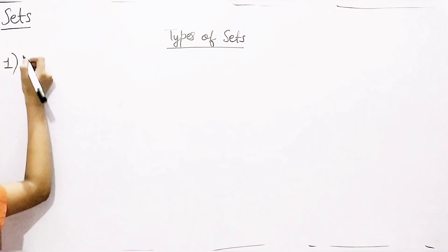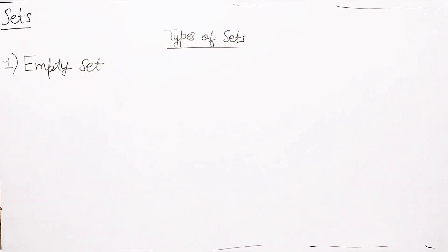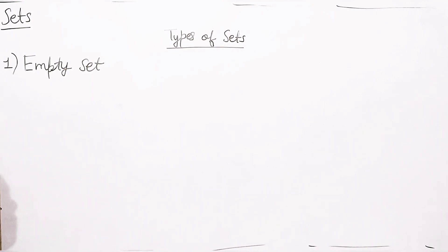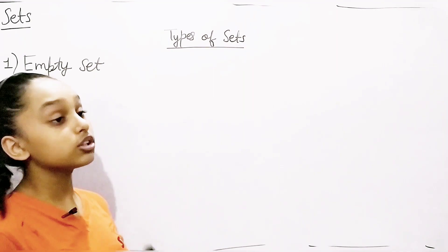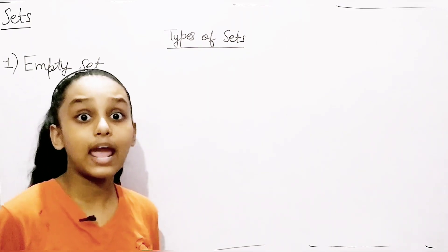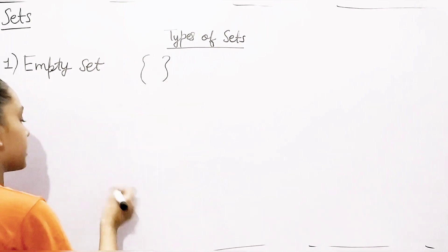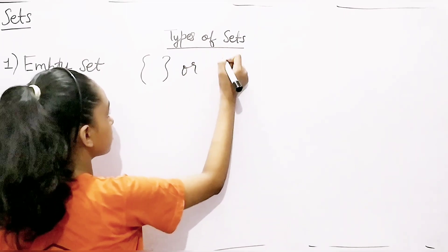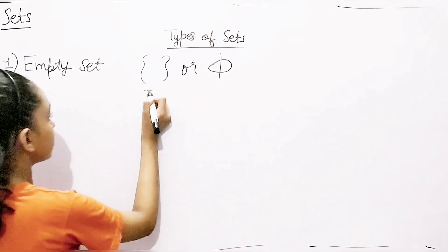So the first type of set we're going to cover is the empty set. Empty set — you can even guess it by its name: the set which is empty. So let me tell you: empty sets are those sets which don't contain any element. We can represent empty sets by just putting braces and writing nothing, or we can use phi — a Greek symbol used for the empty set. You can write it in either form.